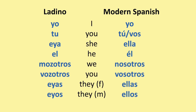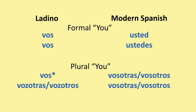As for modern Spanish, you would say yo, tu, vos, ella, el, nosotros, nosotras, vosotros, vosotras, ellas, ellos. Ladino separated before the existence of usted and ustedes in modern Spanish. So for formal 'you', you use vos, which is the second person plural. For both the formal singular you and the plural you, you use vos. For the informal plural you, you could use vos or vosotras/vosotros, like in modern Spanish.